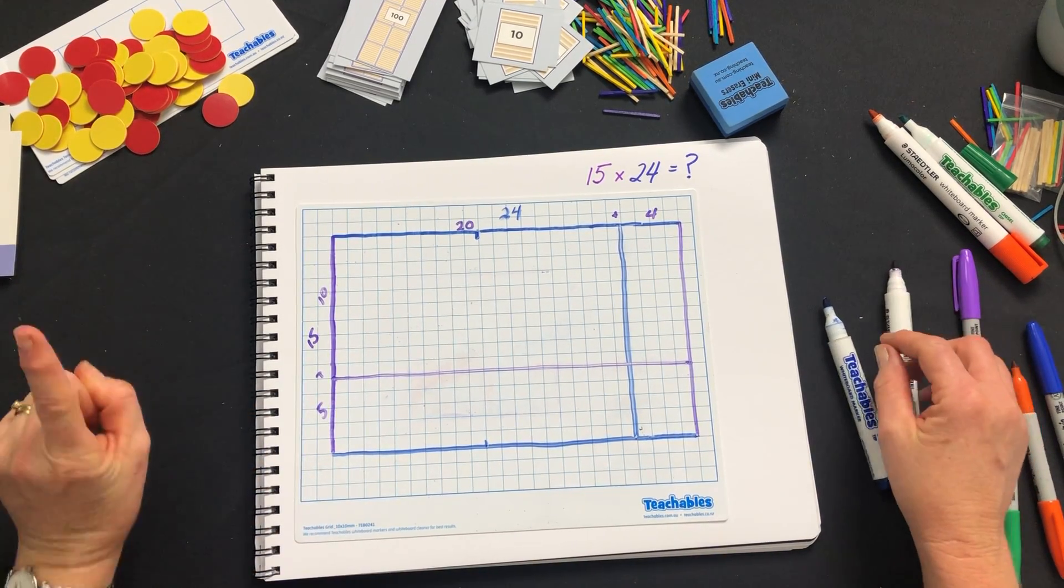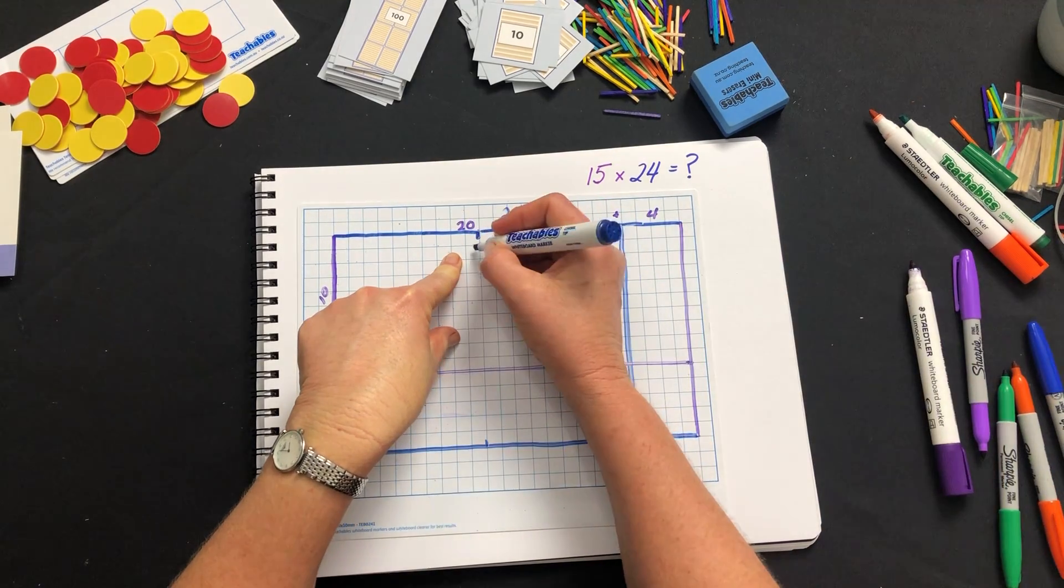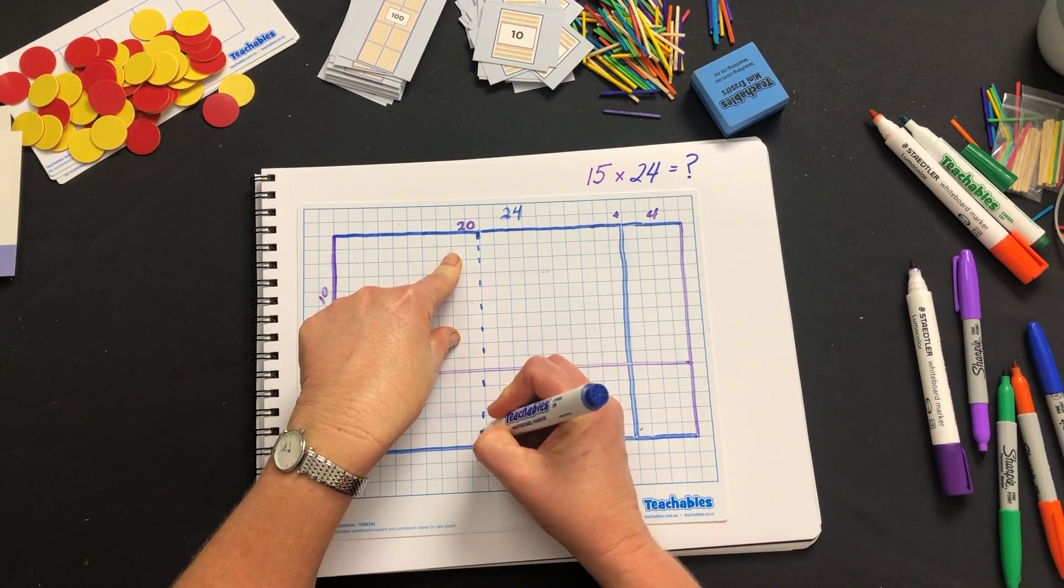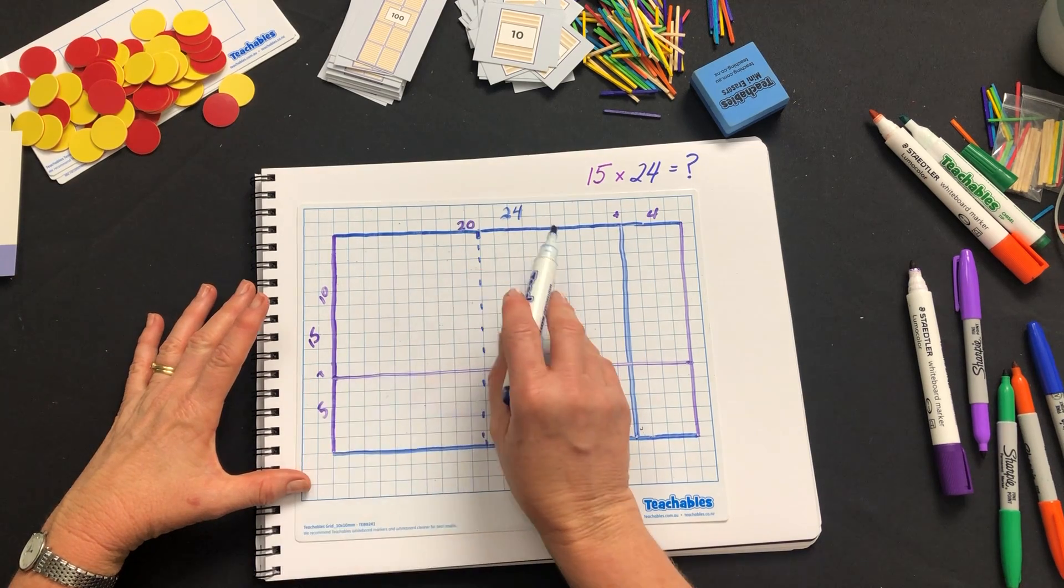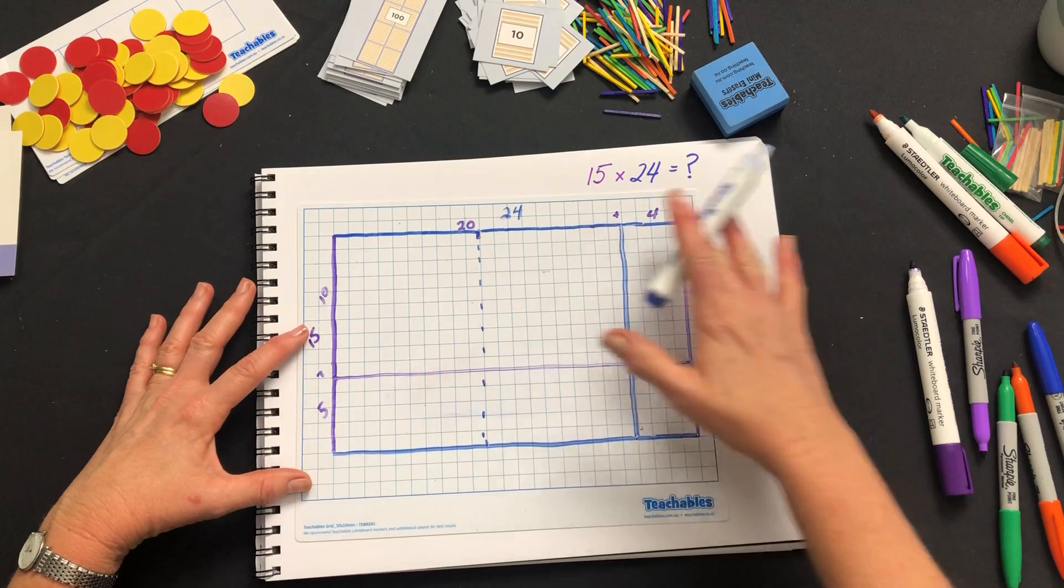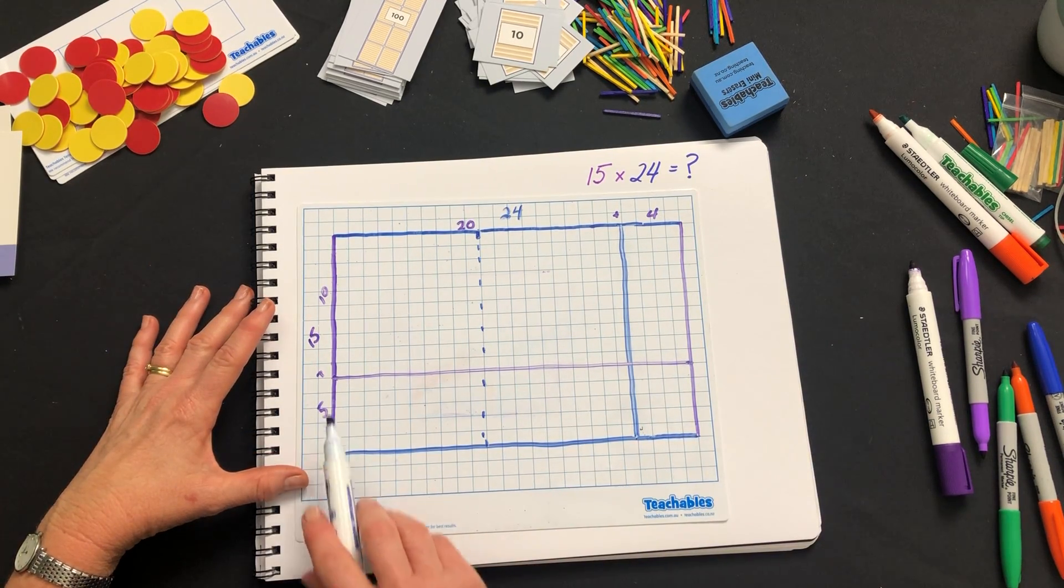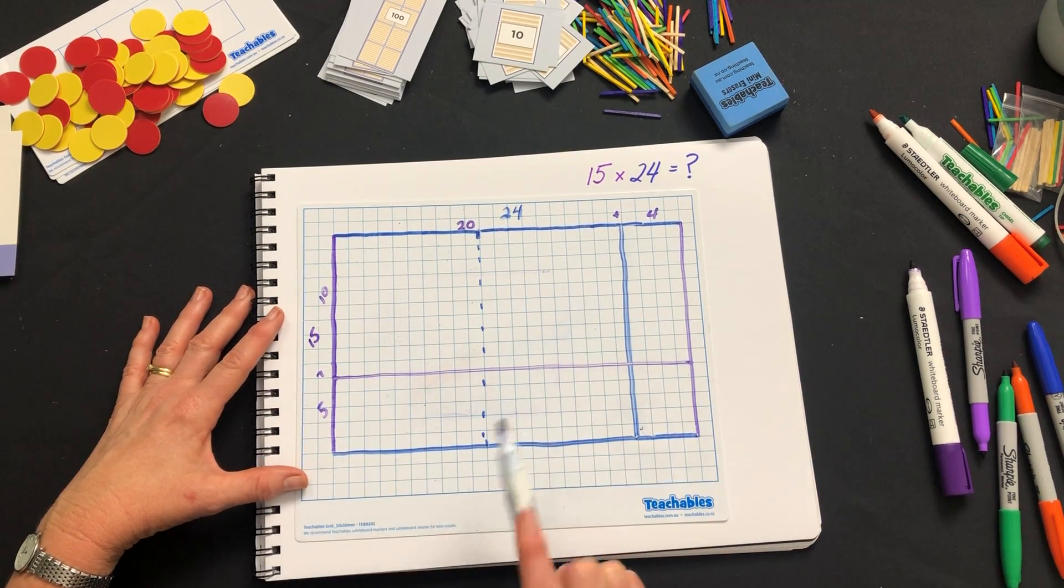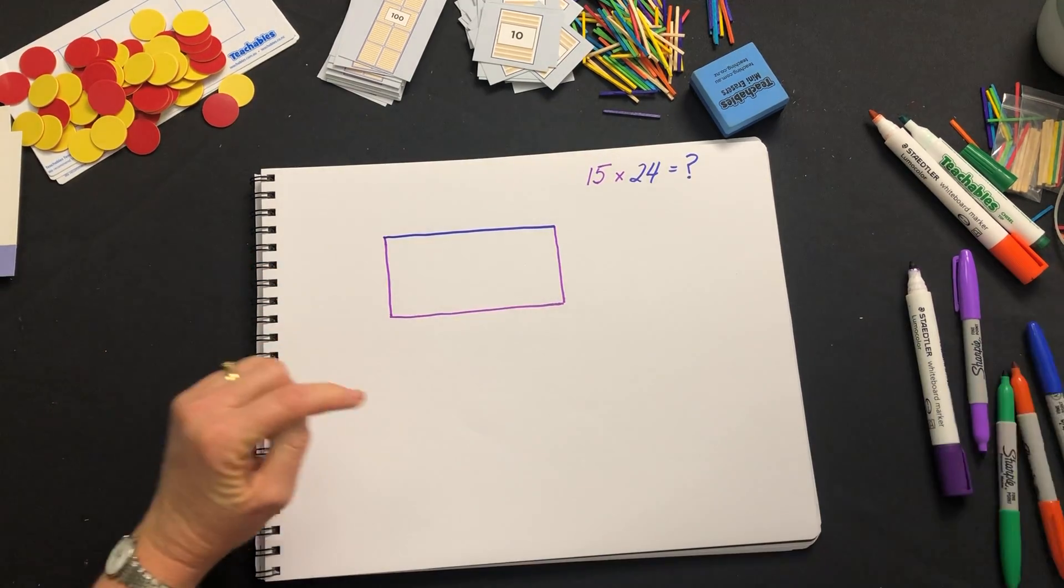Now if your child hesitates at multiplying by 20 you could partition it further so that you in fact have six rectangles there which is 10 plus 10. Okay so that's a physical representation exactly to scale and we can prove it later on if we wanted to skip count in 24s or actually count every grid space.